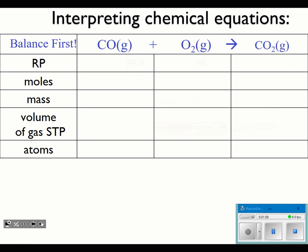So interpreting chemical equations — the first thing you have to do is make sure that you always balance. I have to put a two on both sides so that I can have two carbons on each side. More importantly, I'll have two oxygens plus two oxygens on my reactant side, making four oxygens, and two times two on my product side makes four as well. So for my carbon monoxide, I've got two molecules and two moles of those as well.